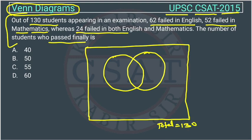I am making the Venn diagram of failed student. This is a Venn diagram of failed student in English and this circle is representing the failed student in mathematics. Now it is given that 24 failed in both. This is showing who failed in both, this is given 24.